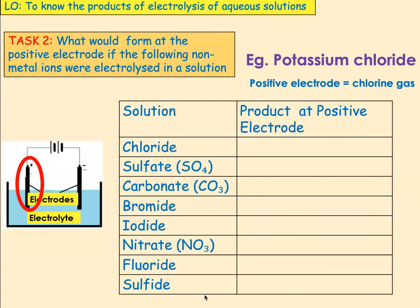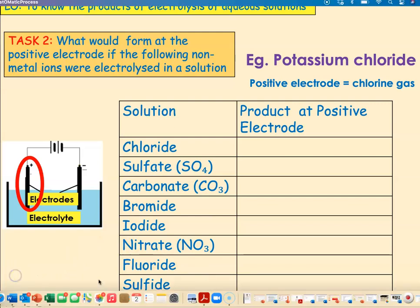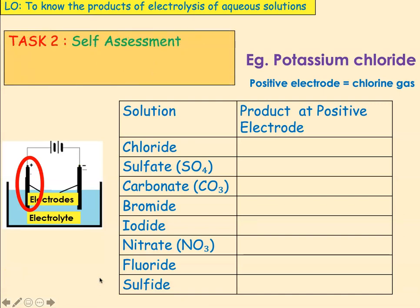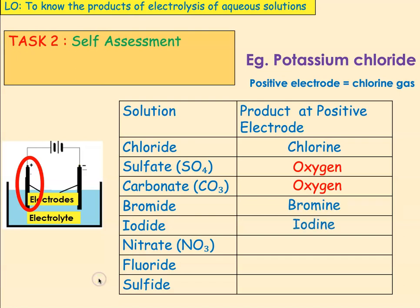Pause the video and predict from the non-metal ions what the product will be at the positive electrode. Self-assessment: chloride ion → chlorine. Sulfate → oxygen, because there's no halide ion present. Carbonate → oxygen. Bromide → bromine. Iodide → iodine. Nitrate — no halide present, so forming oxygen. Fluoride → fluorine. Sulfide → sulfur.